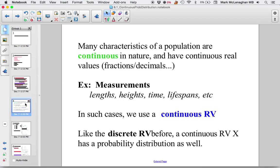There are many characteristics in the population that are continuous in nature and have continuous real values, fractions or decimals, such as the length of something, height, time, lifespan. In such cases, we have a continuous random variable, which is very like the discrete random variable. It's the thing that we're measuring or exploring.